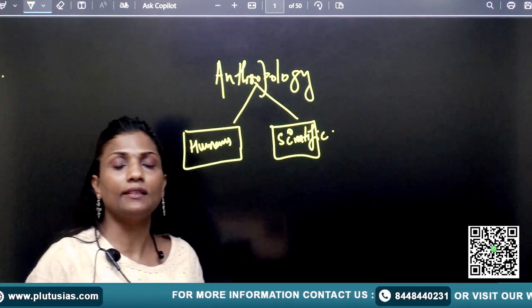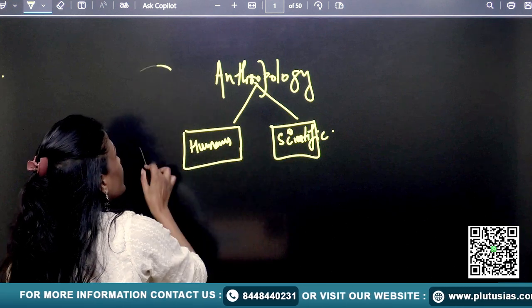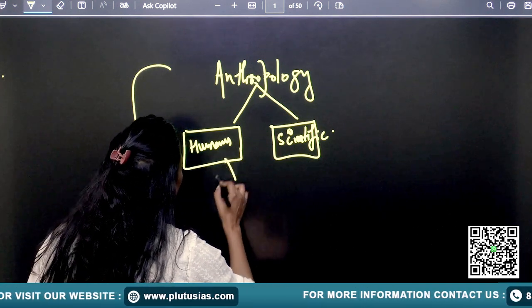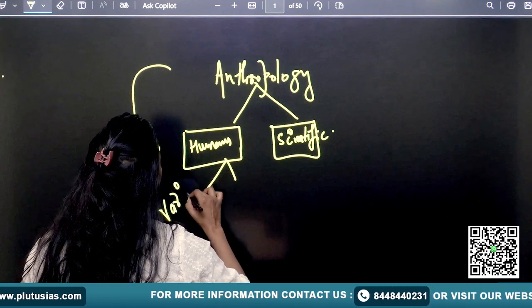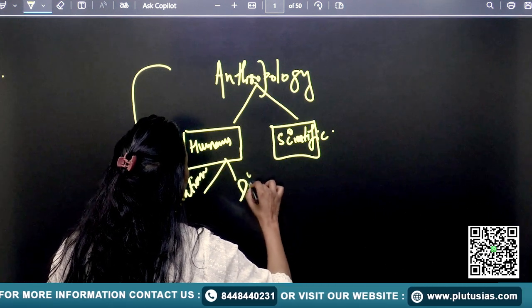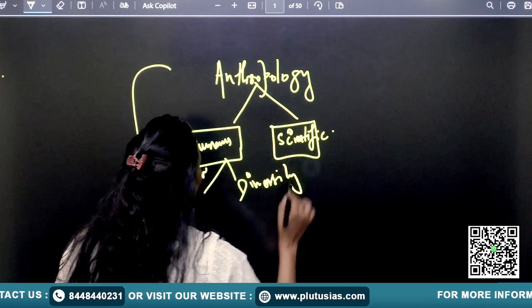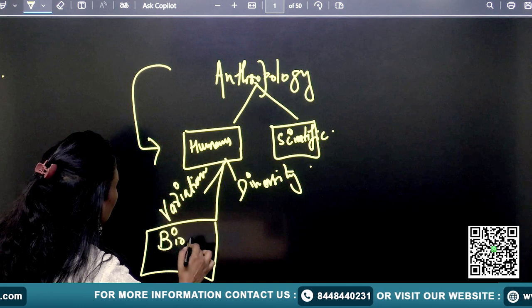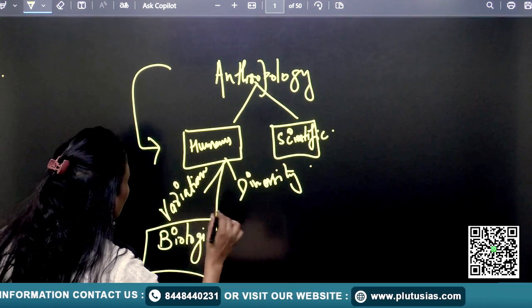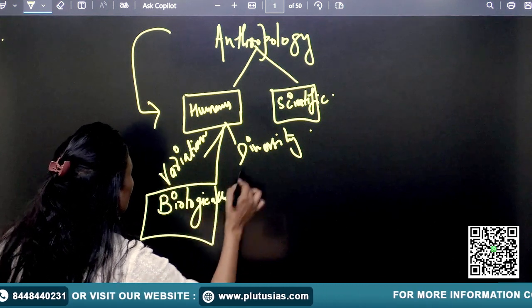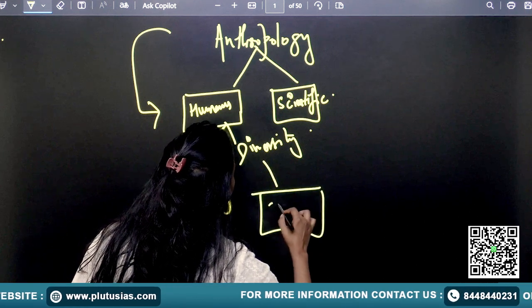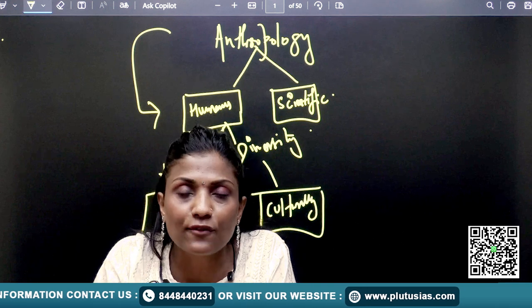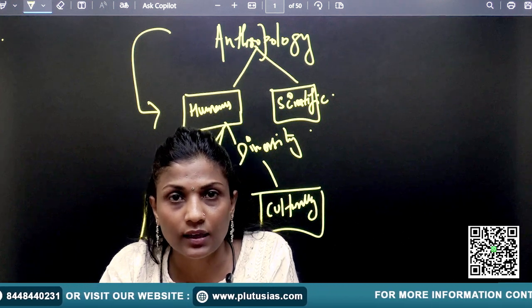We learn about human evolution and humans. In anthropology, we focus on humans' variations and diversity. Humans are different in two ways: biologically, we are different, and culturally, we are different.